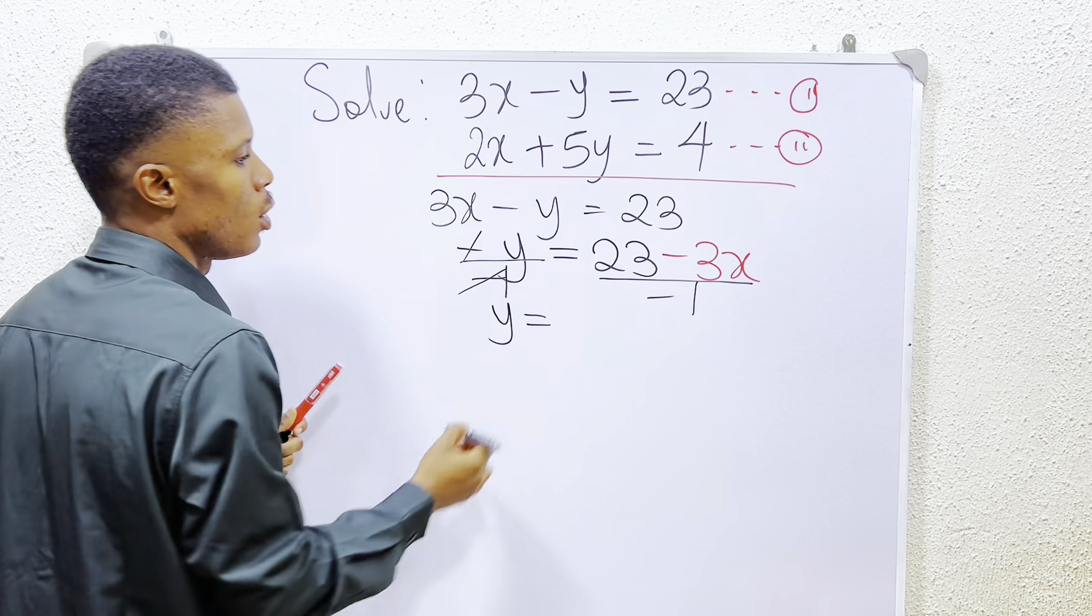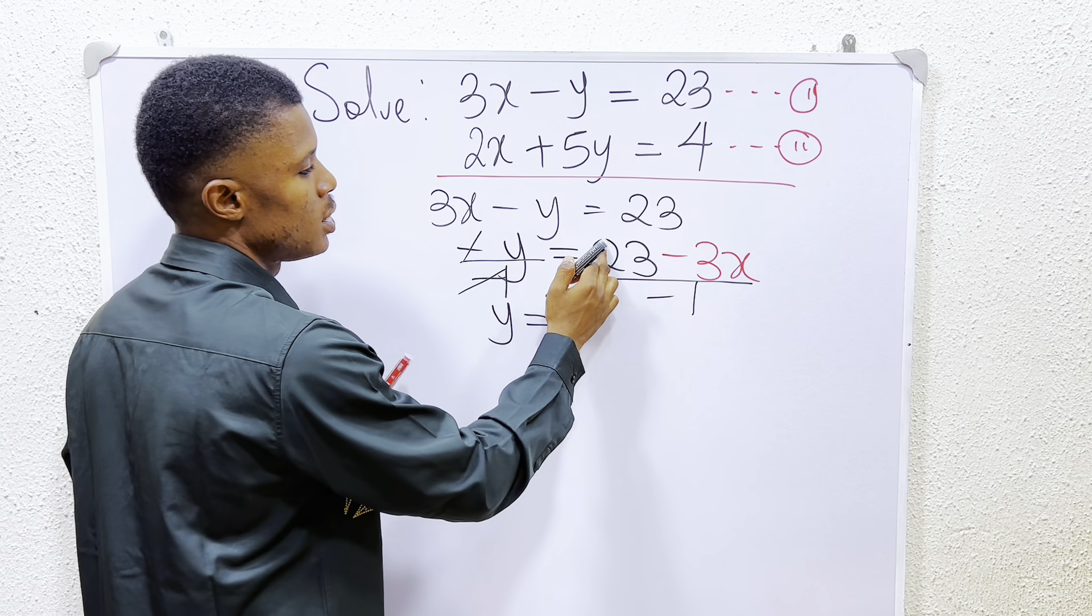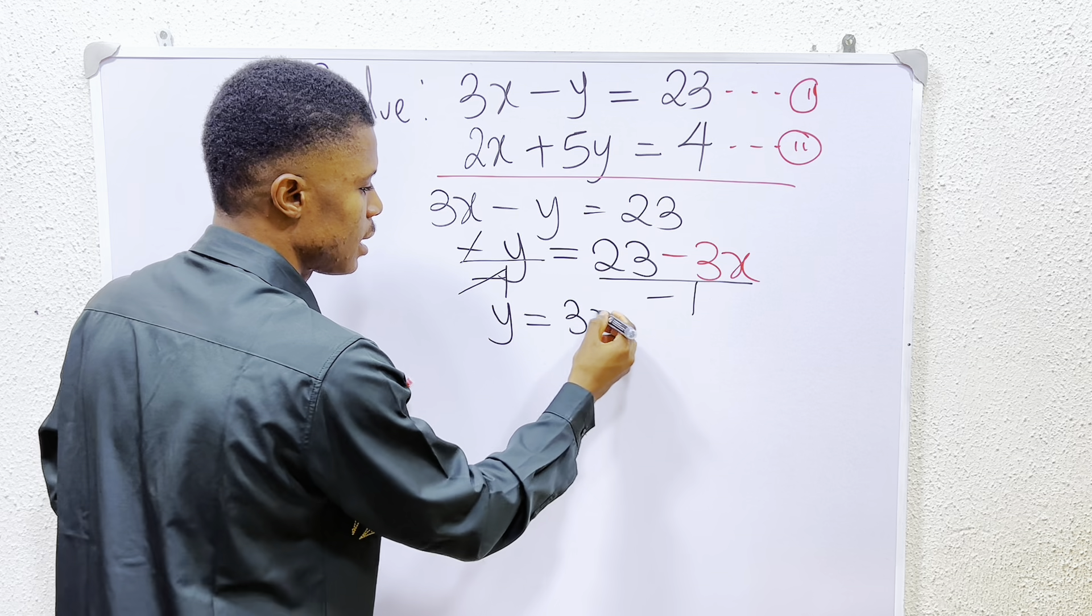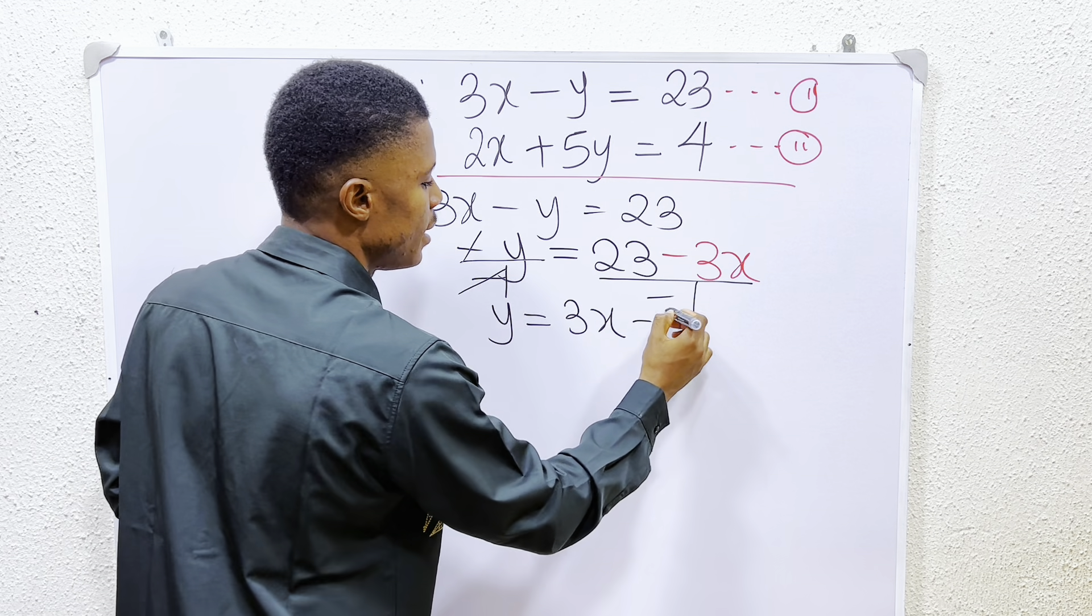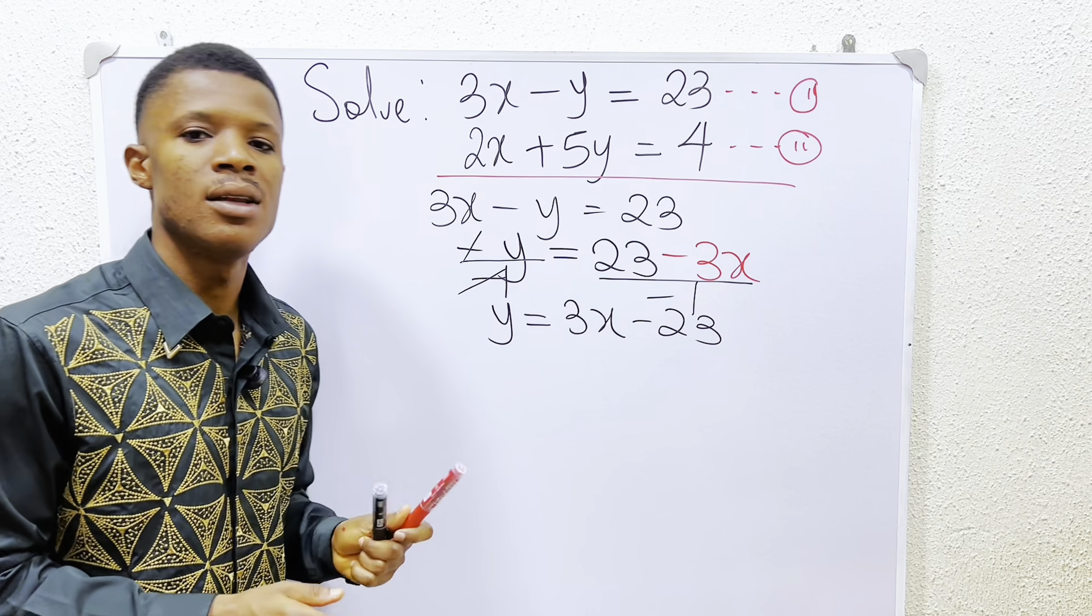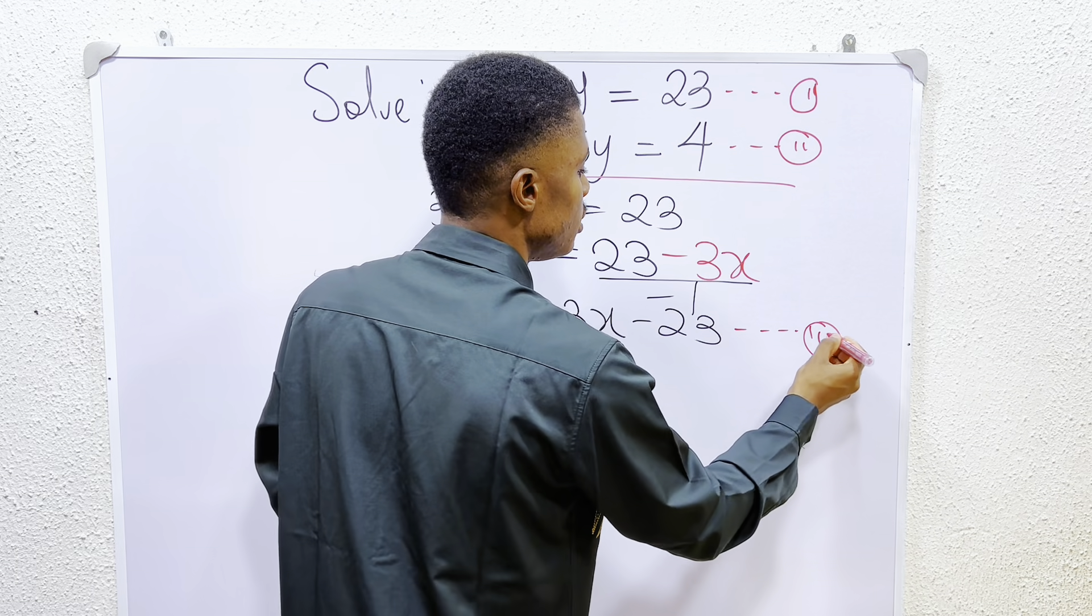We are having y to be equal to. This minus is affecting this. So we have minus 23, and plus 3x. So this is basically 3x minus 23. And this is the value for y. So we can label this to be our equation 3.